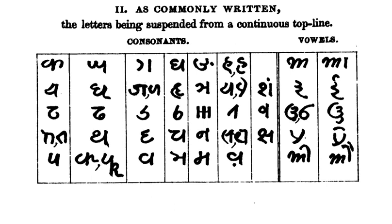Kaithi was the most widely used script of North India west of Bengal. In 1854, 77,368 school primers were in Kaithi script, as compared to 25,151 in Devanagari and 24,302 in Mahajani.